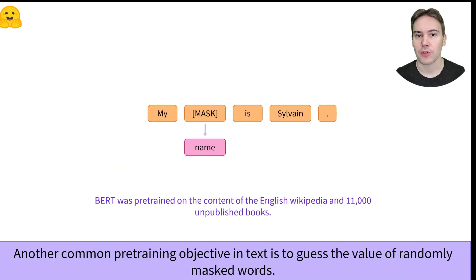Another example of self-supervised pre-training objective is to predict the value of randomly masked words, which is similar to fill-in-blank tests you may have done in school. BERT was pre-trained this way using the English Wikipedia and 11,000 unpublished books.